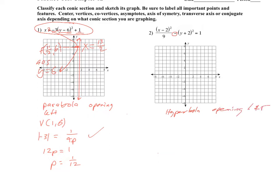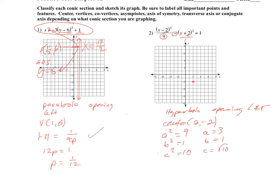We get the center from h, k — so the center is at the point (2, −2). A squared is 9, so a squared equals 9, meaning a equals 3. B squared is the denominator on the y term, which is just 1, so b equals 1. C squared is a squared plus b squared, so that's 10, and c equals the square root of 10, which is a little over 3.